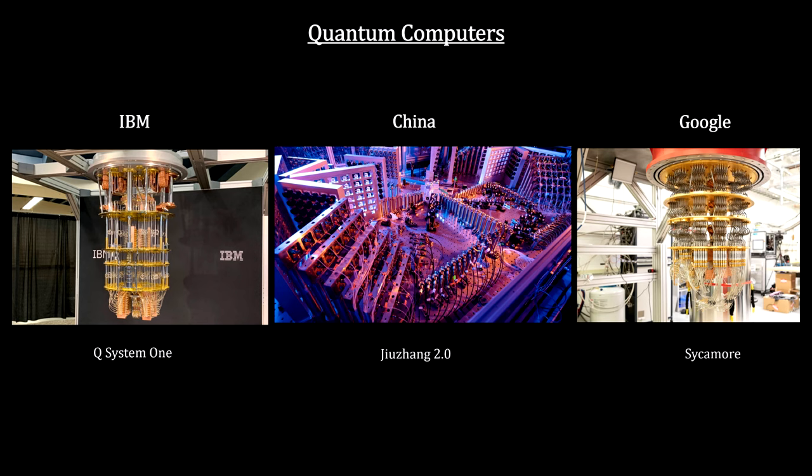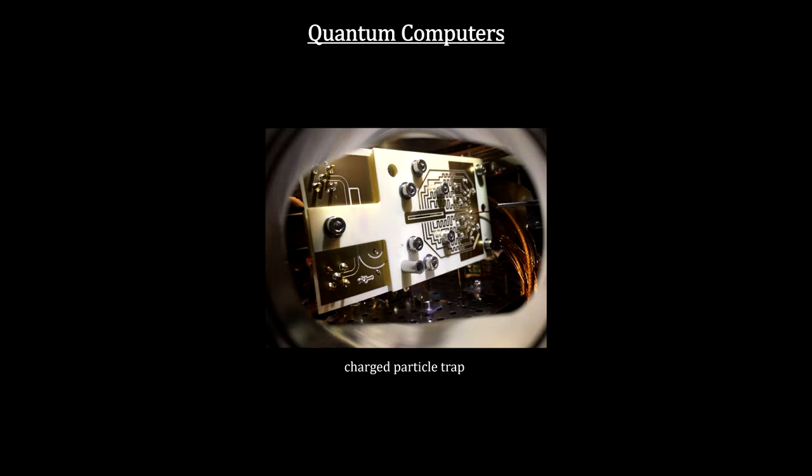The superposition states and quantum entanglement covered in the preceding segments represent the foundational physics for quantum computing. In order to illustrate how this is the case, we'll actually construct a two-electron quantum computer.